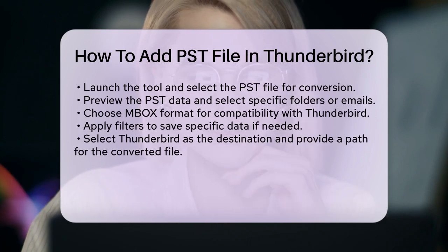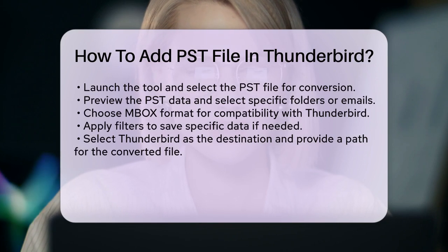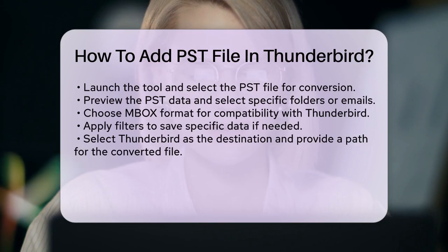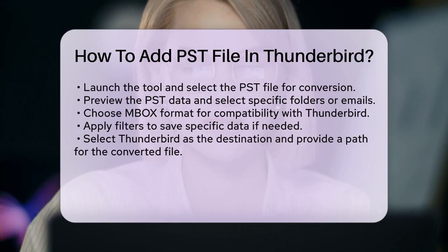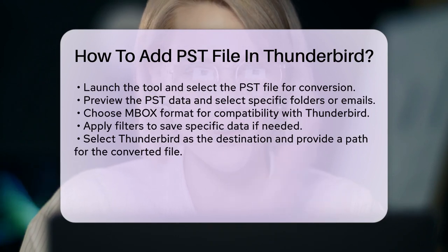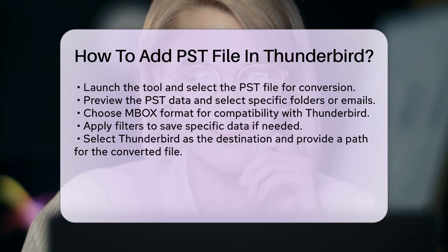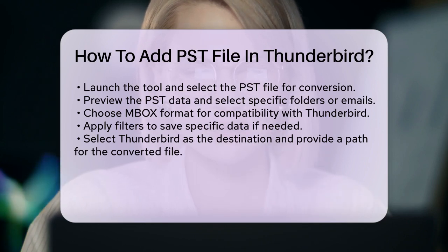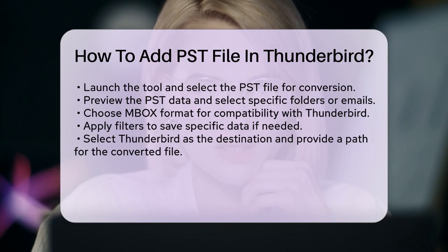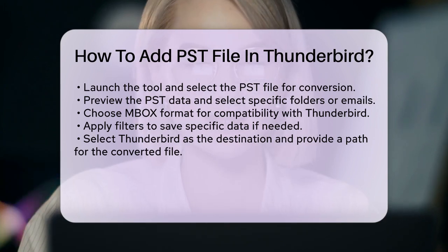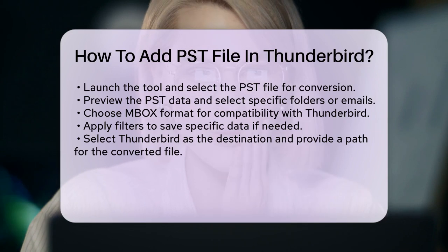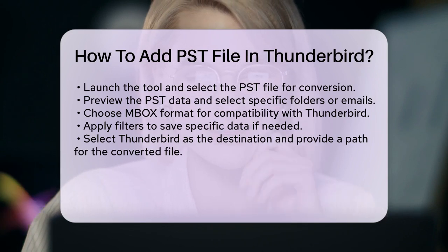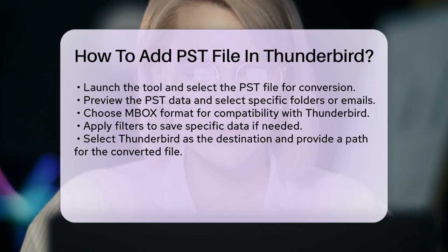Launch the software and select the PST file you want to convert. Preview the data inside the PST file and select the specific folders or emails you want to import. Choose the output format as Mbox, which is compatible with Thunderbird. Apply any desired filters to save specific data. Select Thunderbird as the email client and provide a destination path to save the converted file. Click Finish to start the conversion process.